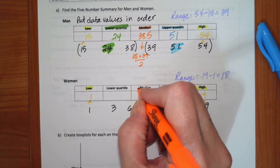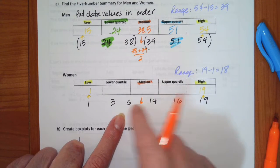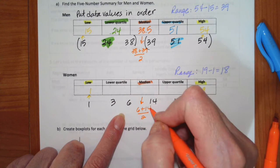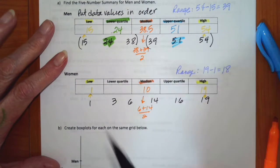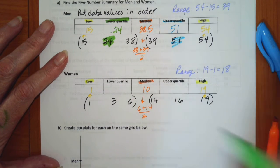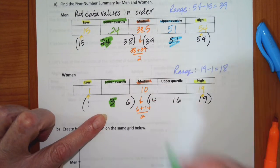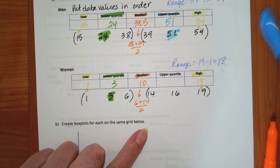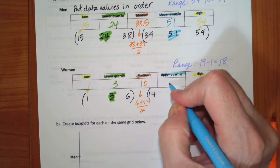Looking at the median for the women: it's the average of the two middle values, giving 20 divided by 2, which is 10. Then looking left and right — since there's an odd number on each side — the lower quartile is right in the middle at 3, and the upper quartile is the middle value of the upper half at 16.